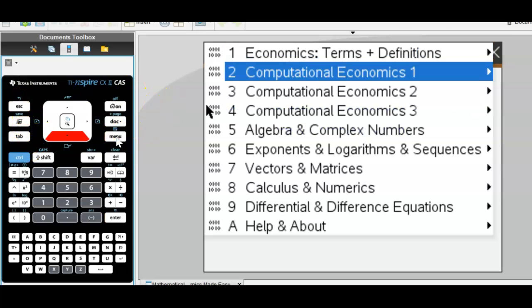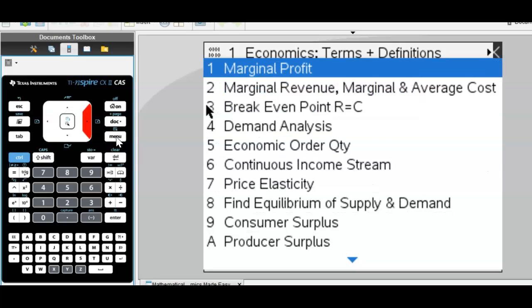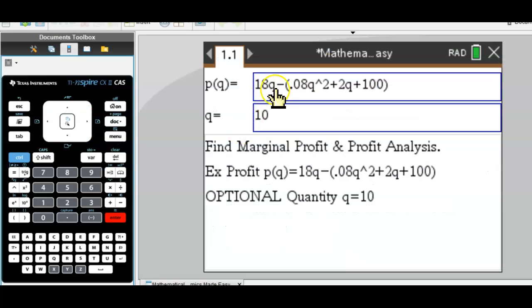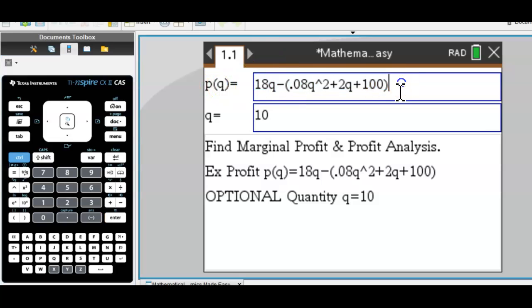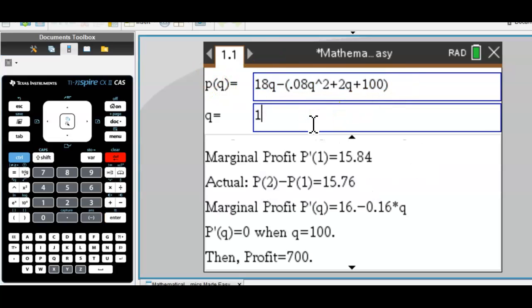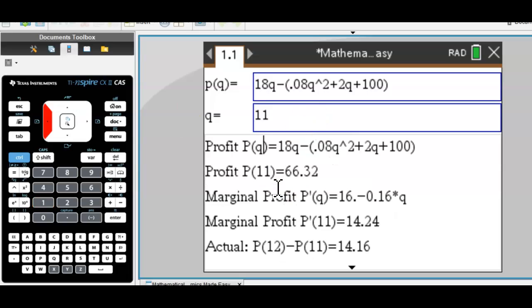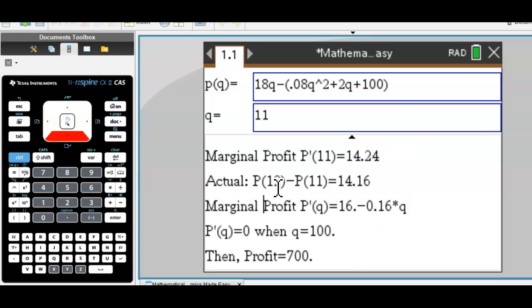Then the computational economics starts here in these three sections. Marginal profit, standard questions. Given your profit equation and quantity, enter the quantity you want, and you get your marginal profit and your profit evaluated as well.